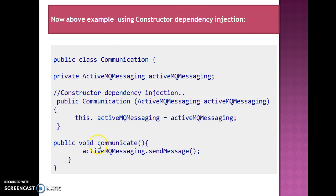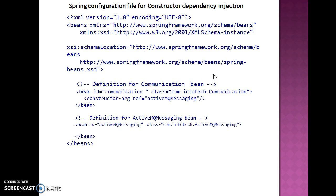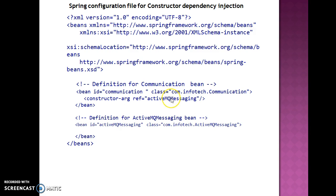The first type of dependency injection is constructor-based dependency injection. We configure constructor-based dependency injection in an XML file like this: you have an XML doc type at the top of the XML file, then we define the beans. We define the bean for communication and to specify the constructor dependency injection we write 'constructor-arg ref' equal to 'activeMQMessaging'. This is the ID of the ActiveMQ class, which is also another Spring bean. This ID we have mentioned in the configuration. This is called Spring constructor-based dependency injection, and this is the first kind of dependency injection.